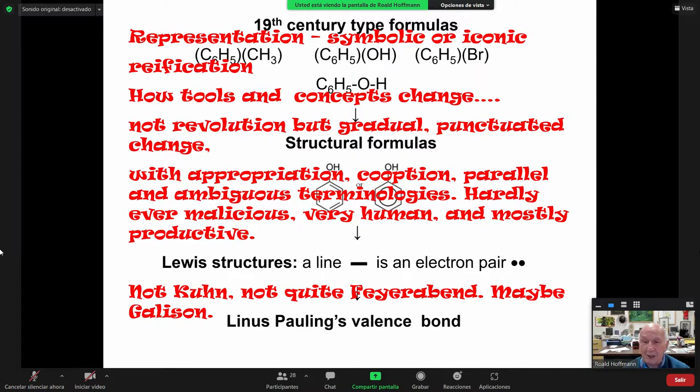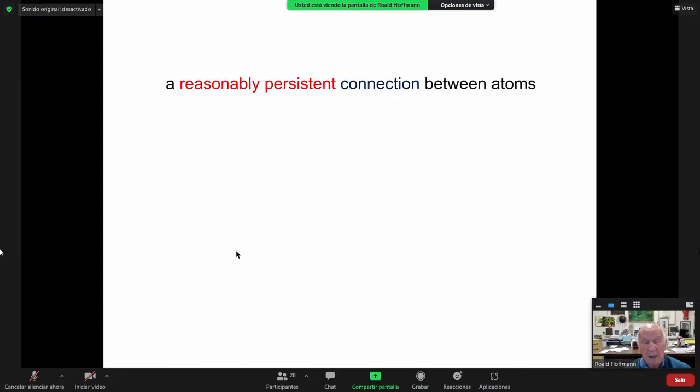What I'm going to do in the first hour is tell you about ways of probing bonding experimentally, and in the second hour, theoretically. Experimentally, we get distances, dissociation energies, force constants, electron density, magnetic and spectroscopic probes, and lately scanning tunneling microscopy and atomic force microscopy. What we have today is a reasonably persistent connection between atoms as a definition of a bond. This does not satisfy some people because the words are vague - reasonably persistent - but every word here has meanings.